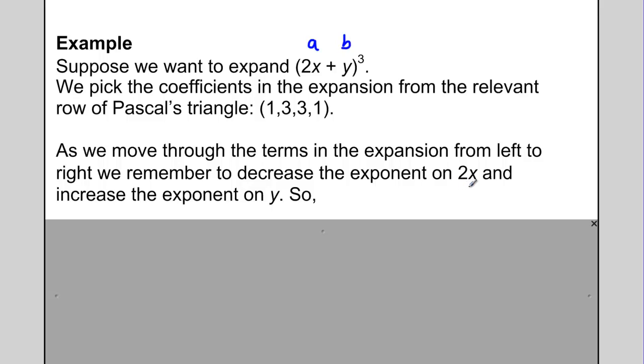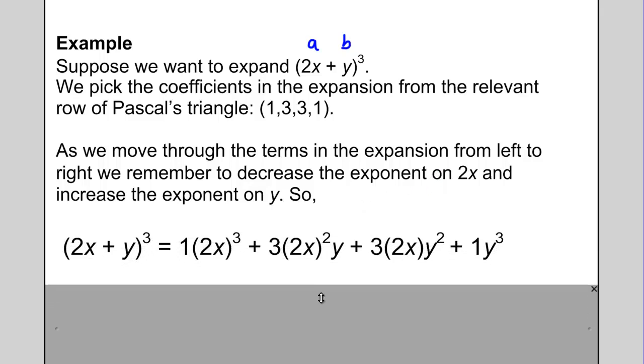Remember the other rule: as we move through the expansion from left to right, we will decrease the exponent of 2x from 3 all the way down to 0, but increase the exponent on y from 0 all the way to 3. So it will end up looking like this. 2x plus y all cubed equals, I write the coefficients 1, 3, 3, 1 in front of the 4 different terms.